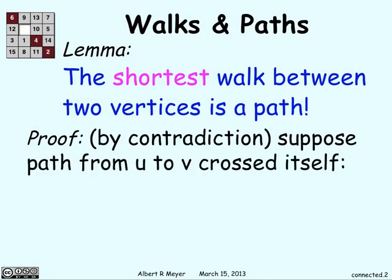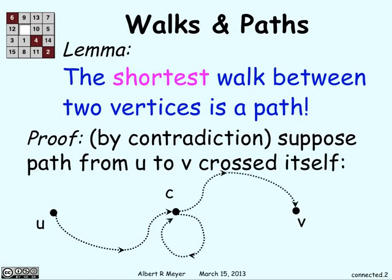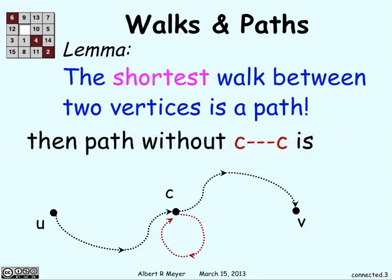Suppose we have some path from u to v, and it crosses over itself. Here we have u and v, and at some point you get to c, and you go back to c, and from there you go to v. You've gone through some vertex c twice, but if you want to get the shortest path from u to v, why would you go through this loop? Why not just keep going straight from c to v?